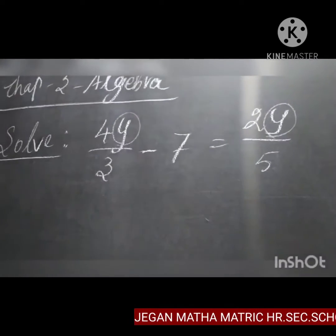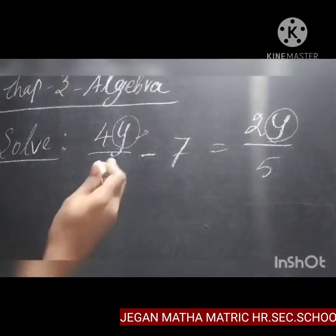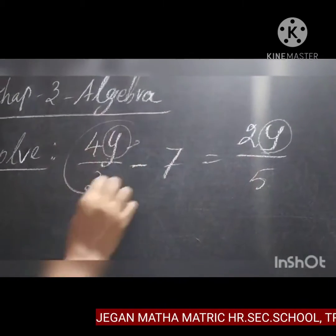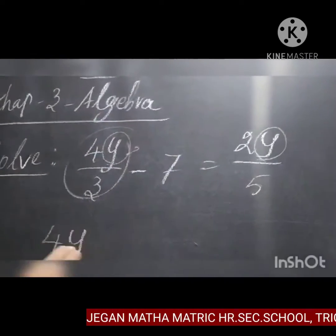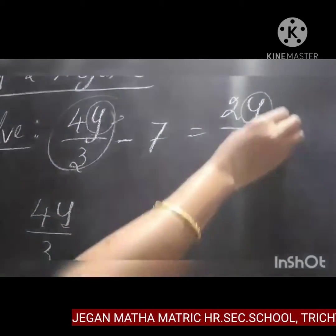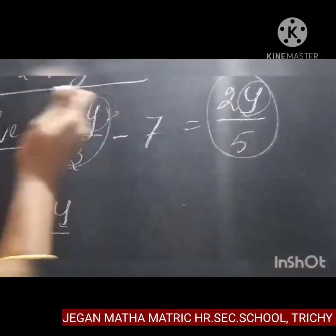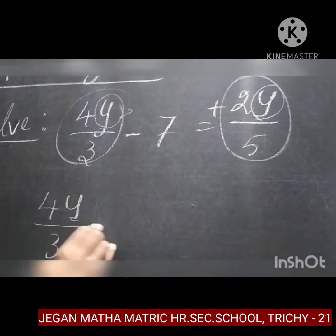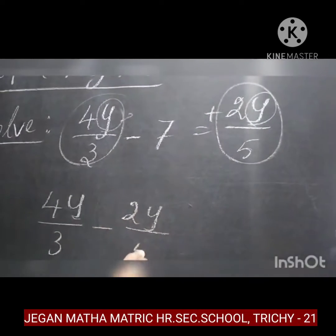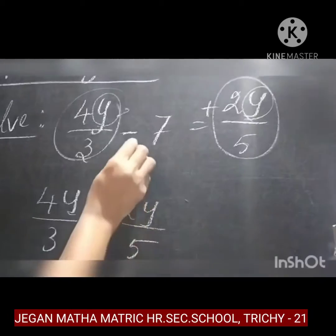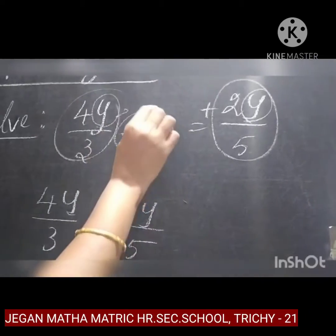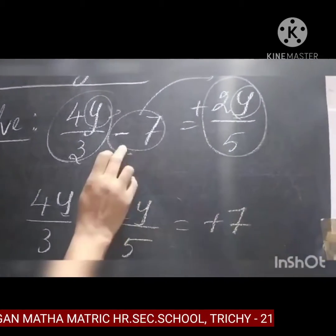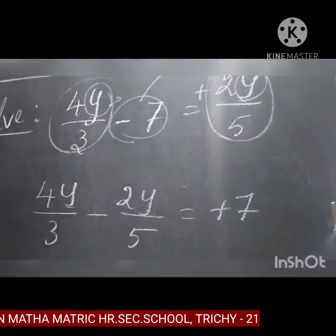If you want to find out the value of this variable, you can collect the variable terms on the left hand side. So first, keep 4y by 3 on the left. This 2y divided by 5 comes to this side, so here it becomes plus 2y by 5; coming to this side means it is minus 2y divided by 5. Now, minus 7 comes to the RHS side, so it becomes equal to plus 7. The sign is changing: minus 7 comes to this side means the sign is plus 7.